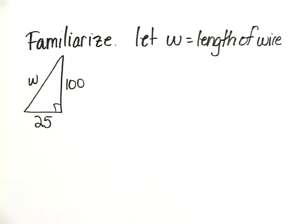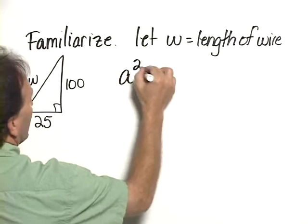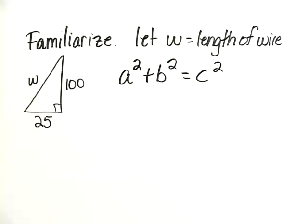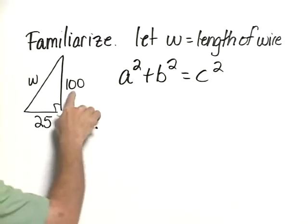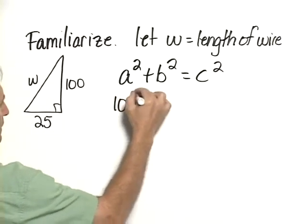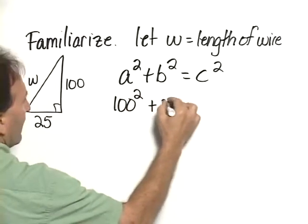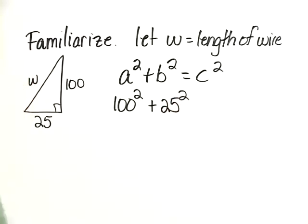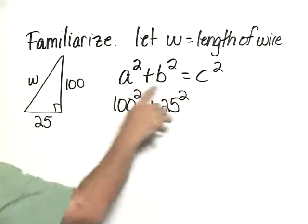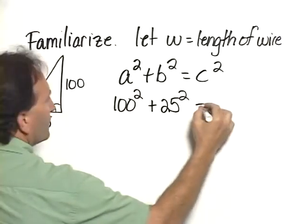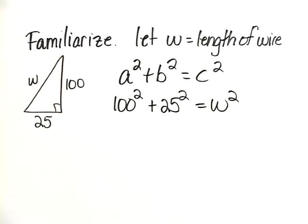Therefore, we should use the Pythagorean theorem. Remember, the Pythagorean theorem is a² + b² = c². We replace a with 100, so 100 squared; we replace b with 25, so 25 squared; and we replace c, which is the hypotenuse of the triangle, with w, so it's w².